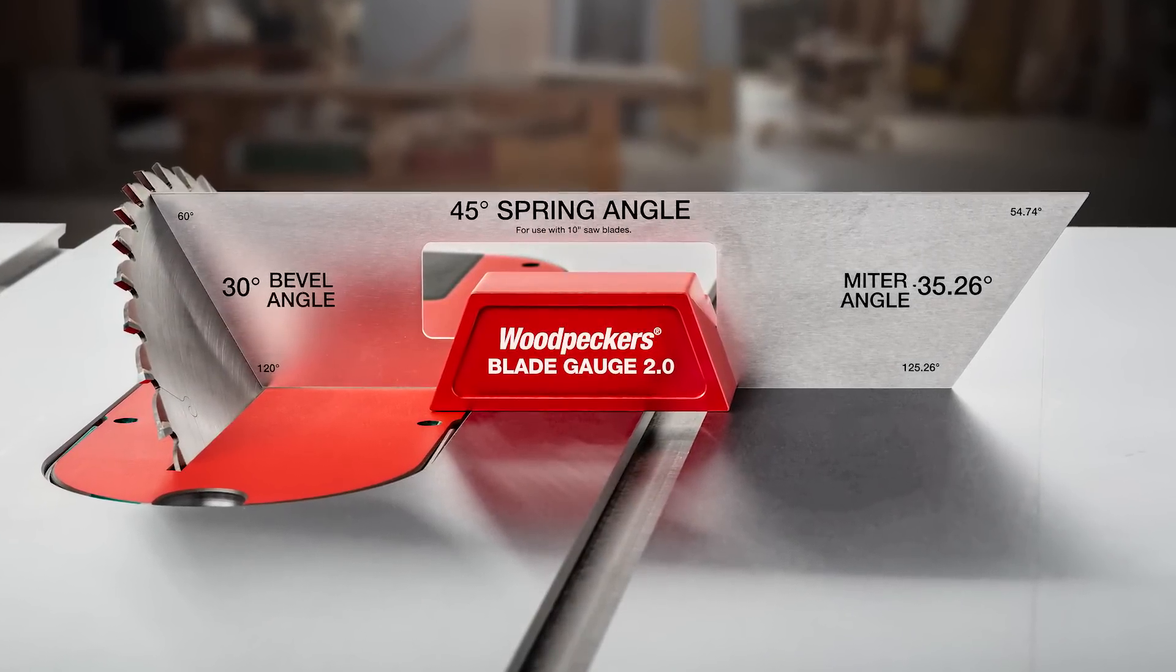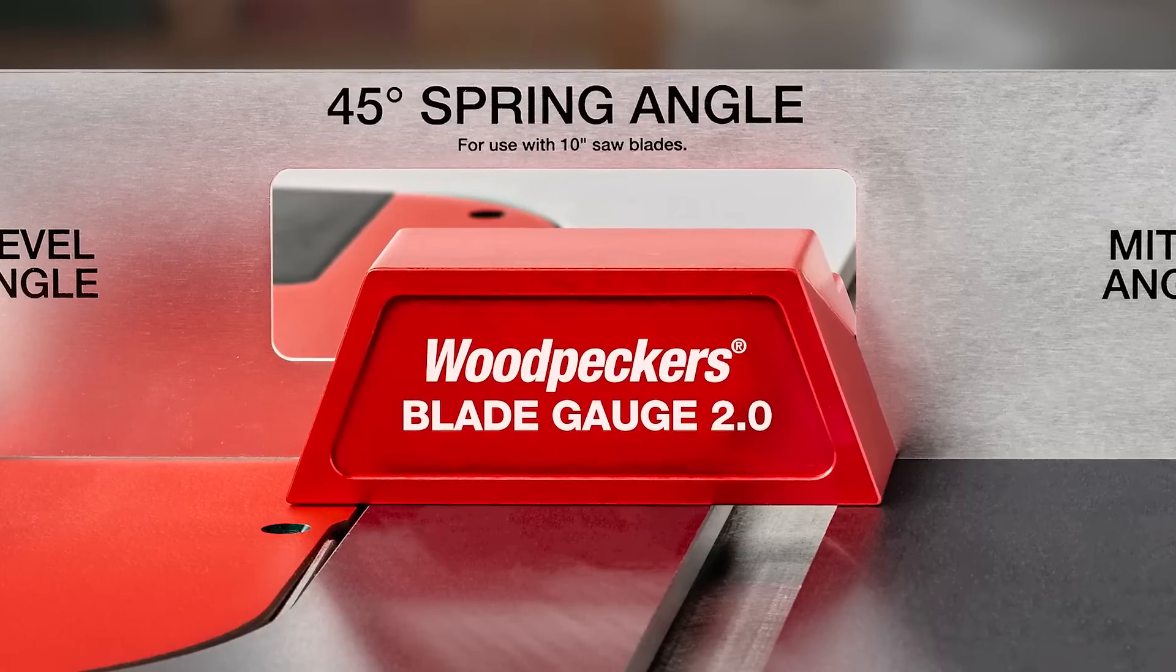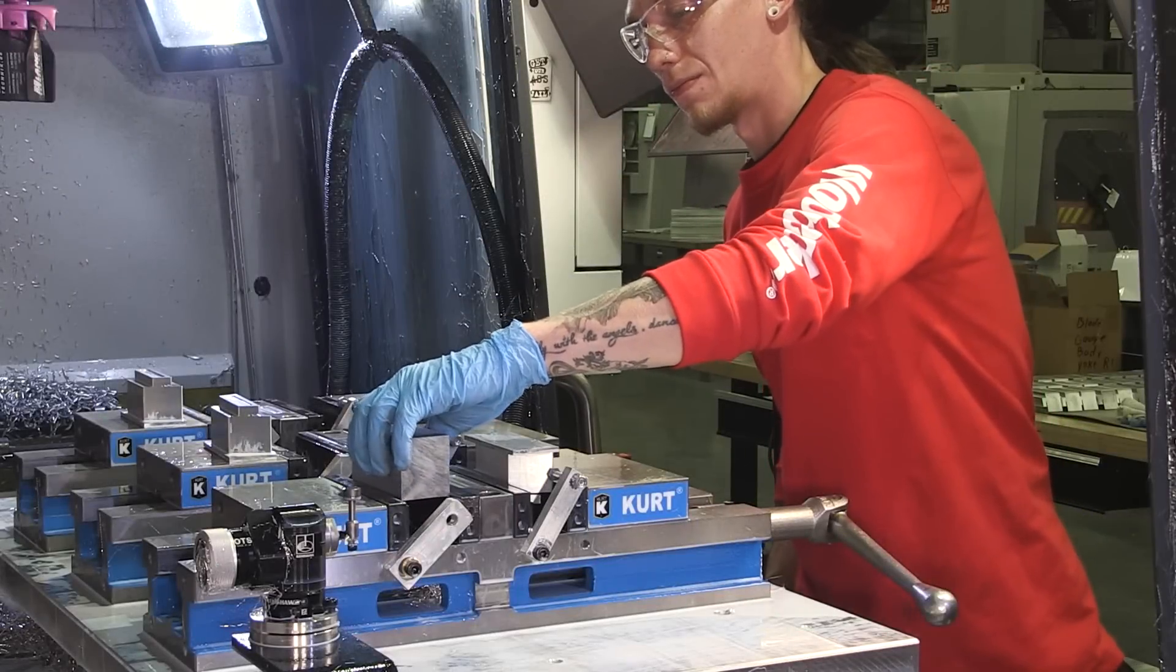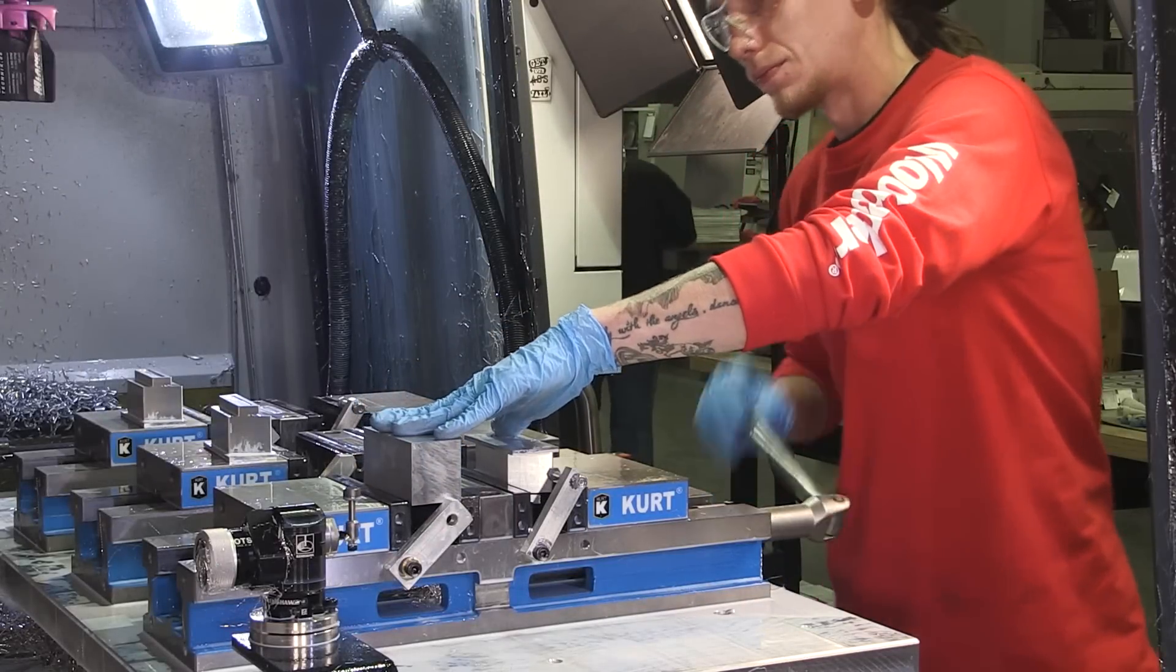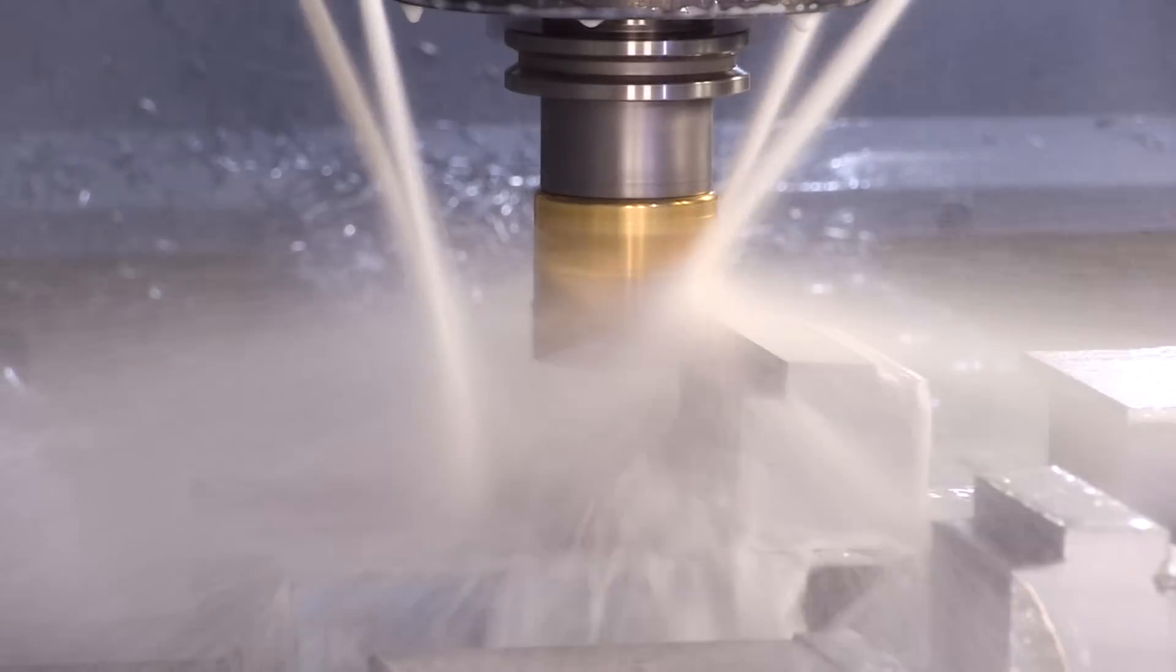The Woodpecker's Machine Shop is hard at work on the Blade Gauge 2.0. So let's first check out how the aluminum body of the tool is made. We start with solid blocks of aluminum, milled in one of our state-of-the-art CNC machines.